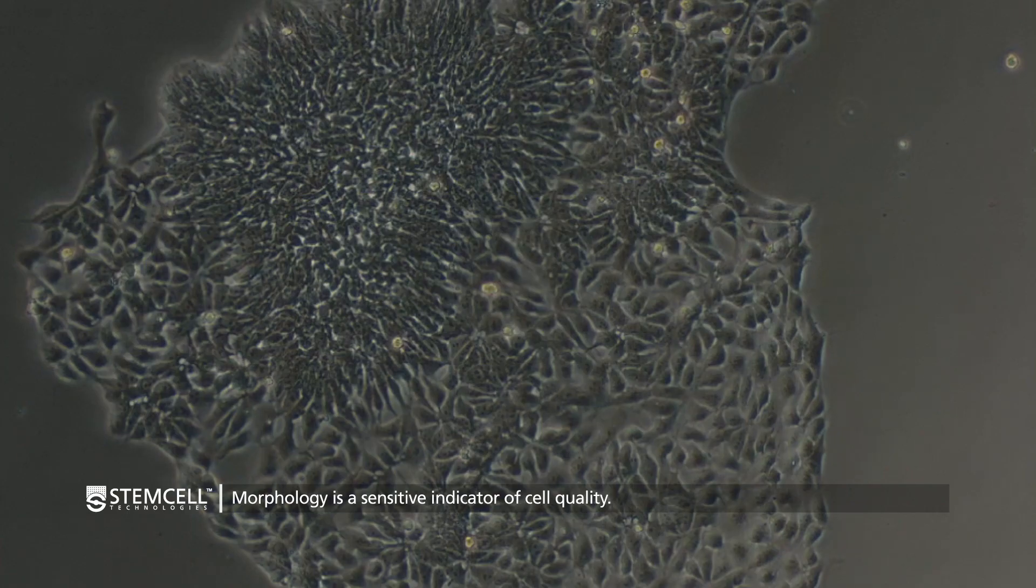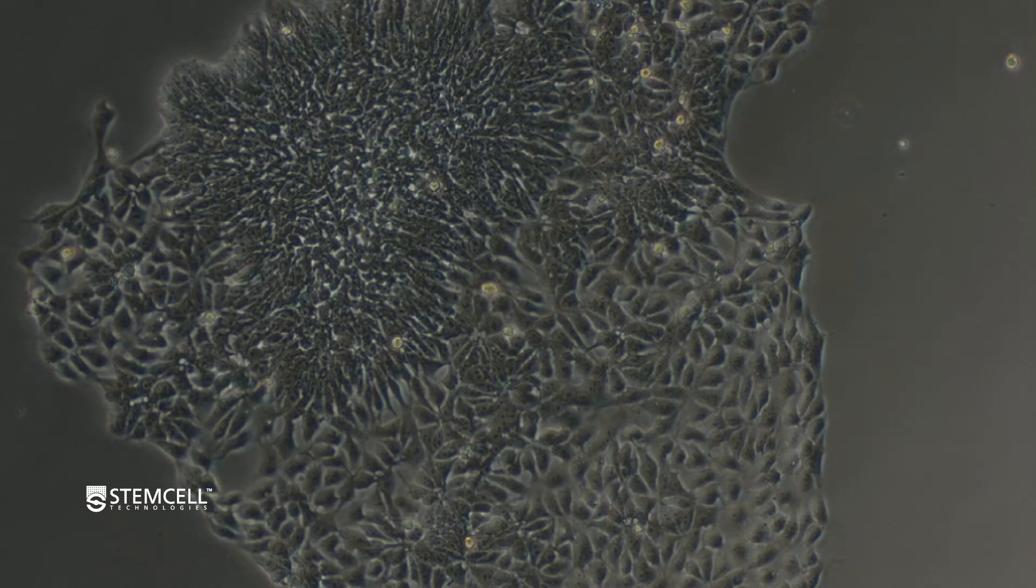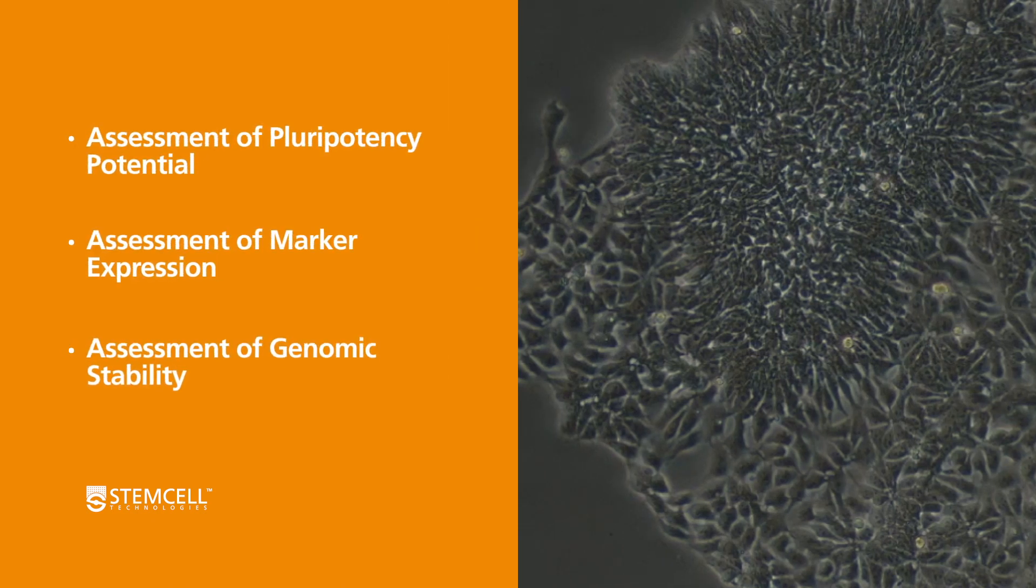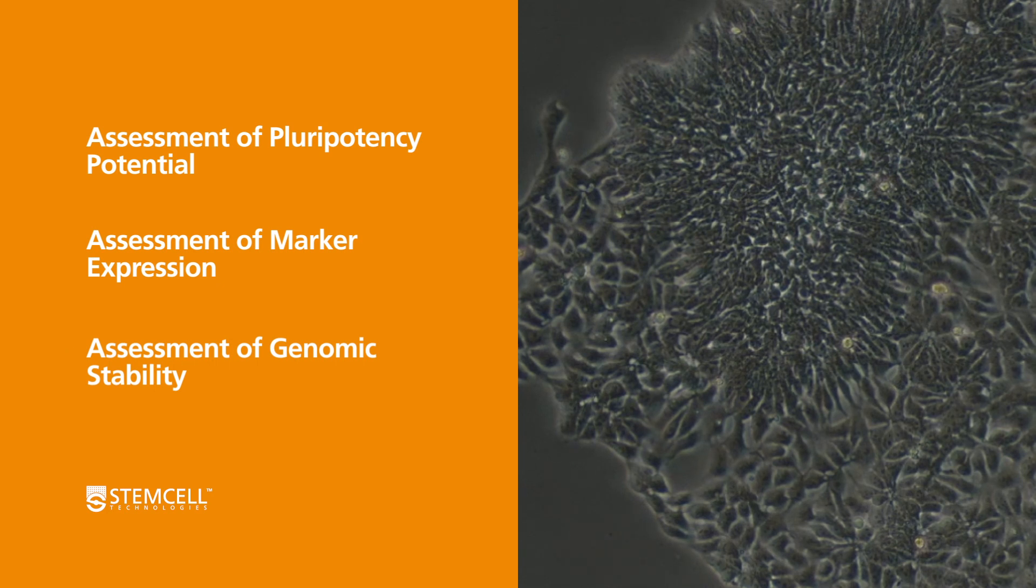If you consistently observe higher levels of differentiation during each passage schedule, we recommend you further assess the quality of your culture by examining pluripotency potential, expression levels of markers of undifferentiation, and the genomic stability of the cells.